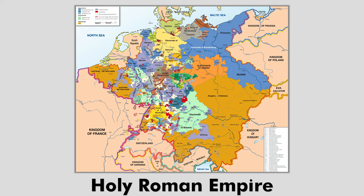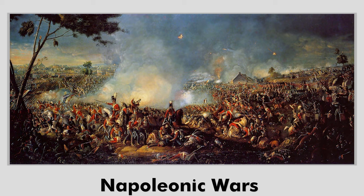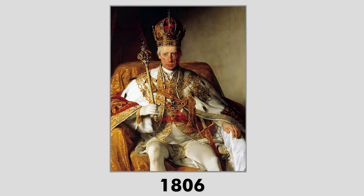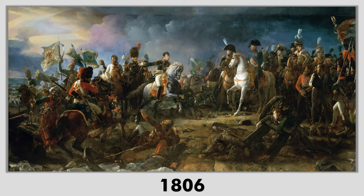The Holy Roman Empire had survived over a thousand years. The Napoleonic Wars brought an end to the empire. The empire was dissolved in 1806 when the last Holy Roman Emperor, Francis II, abdicated following a military defeat by the French under Napoleon at Austerlitz.